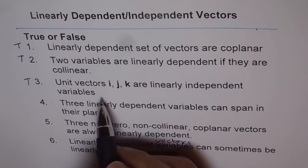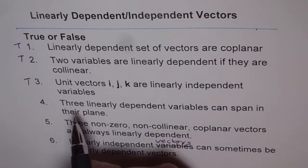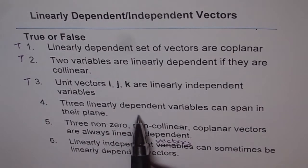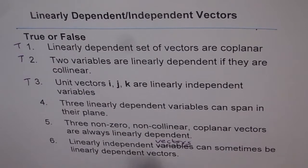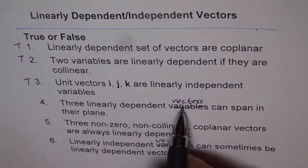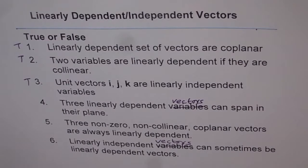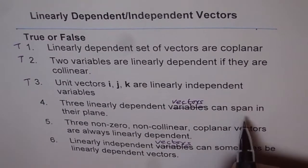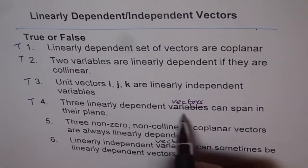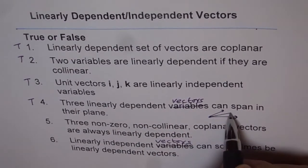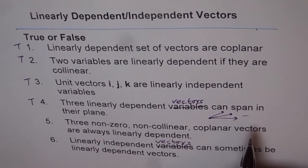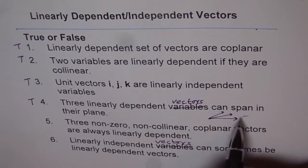If you have a set of vectors which are linearly independent, then they can span. Question 4: Three linearly dependent vectors can span in their plane — that is true. If there are three dependent vectors, they lie in one plane and can span any vector in that particular plane. However, they cannot span R3 — only within that particular plane.